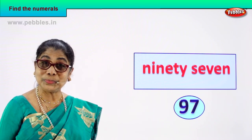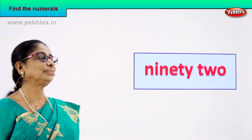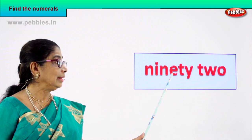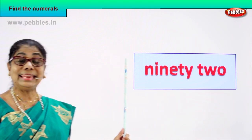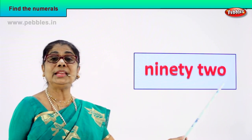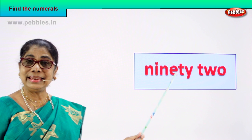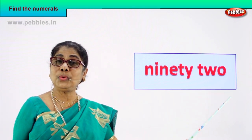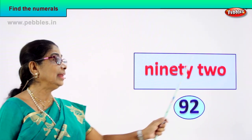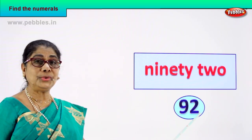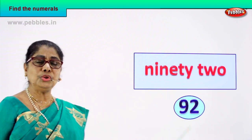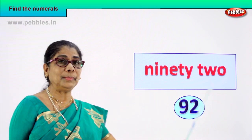Shall we take another number name? Look, read on: N-I-N-E-T-Y, 90, T-W-O, 2 — 92. Read again, 92. How will you write 92 as a numeral? 92 — 9 and 2, 92. 9 and 2, 92. 92 is the numeral for this number name. Did you enjoy?